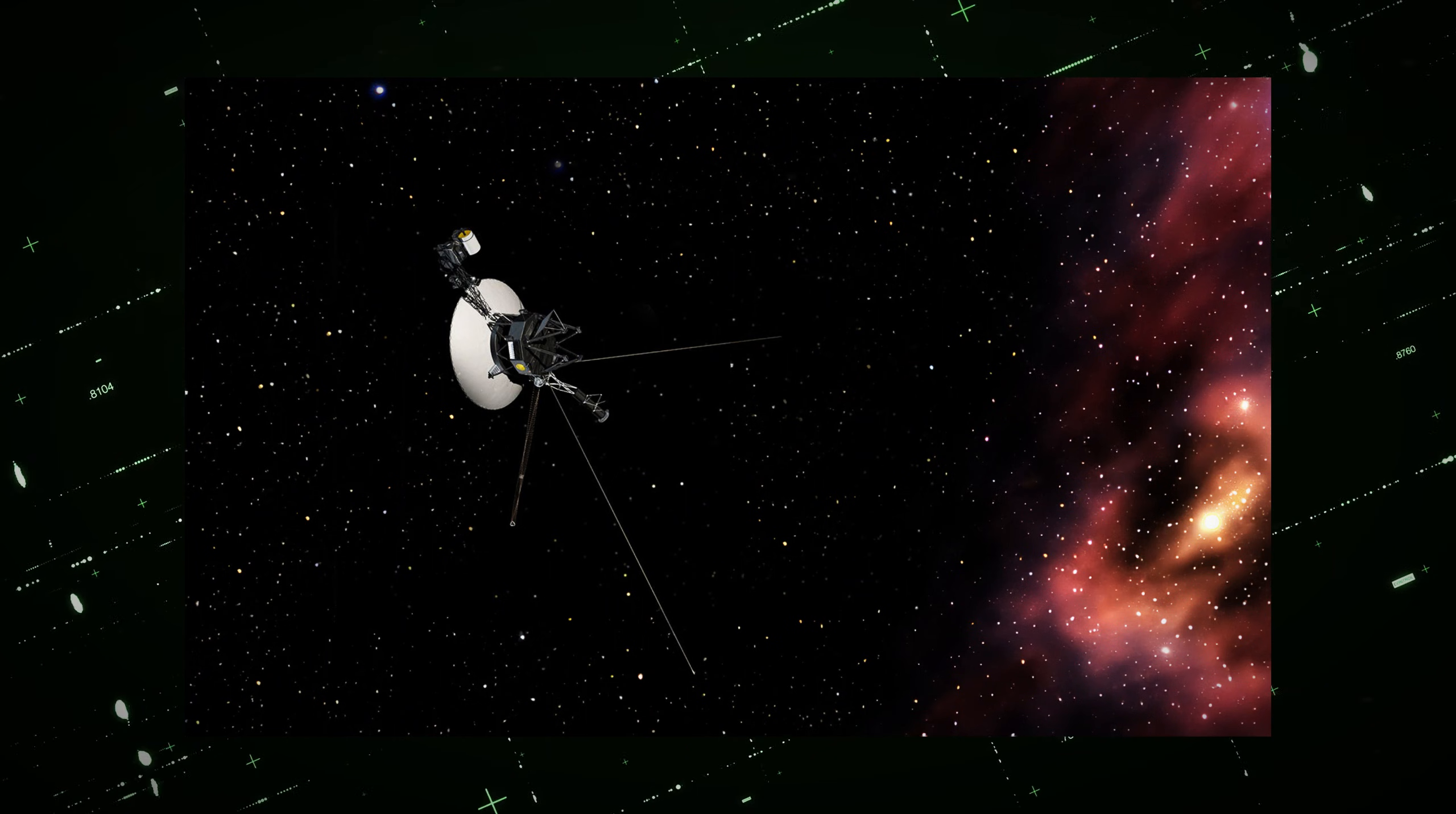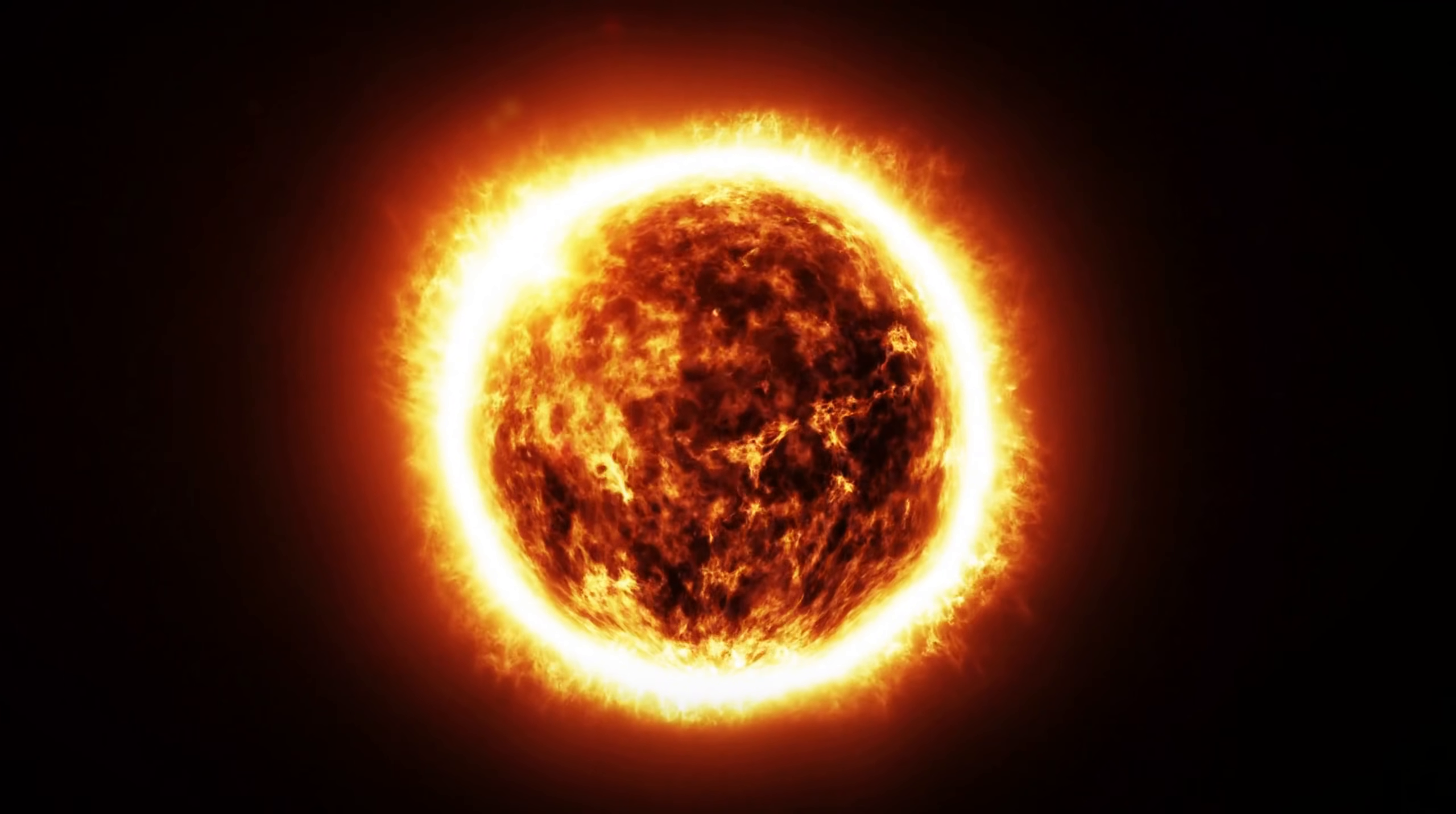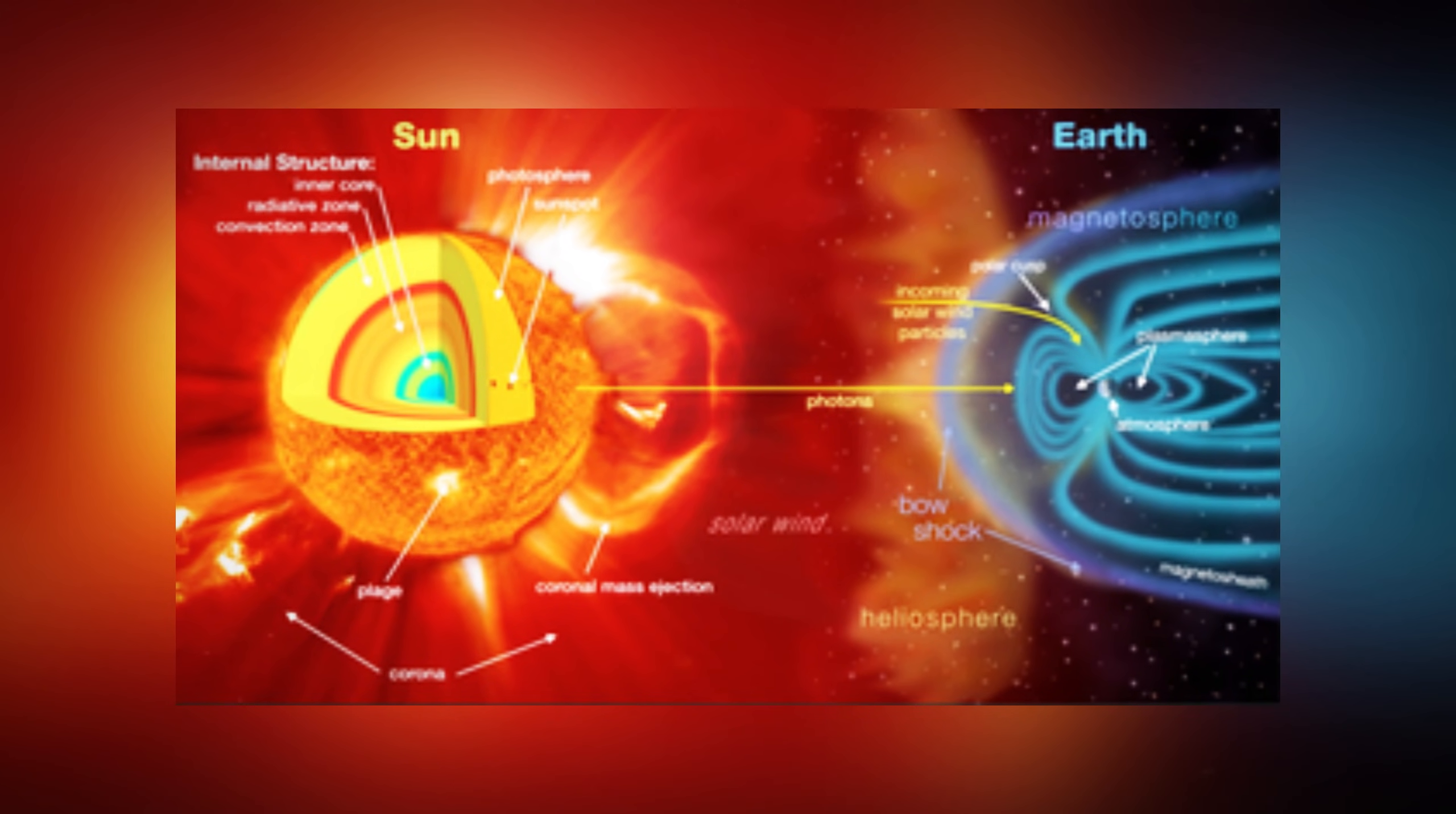To appreciate the significance of Voyager 2's discoveries, it's important to first understand the dynamic nature of the Sun. The Sun is far from a peaceful ball of light. It is a star, a massive nuclear furnace speeding through the galaxy at roughly 450,000 km per hour. Its surface is a complex network of magnetic fields, which drive the continuous outflow of electrically charged particles, known as the solar wind. This solar wind streams in all directions, carrying the Sun's magnetic field across vast distances.